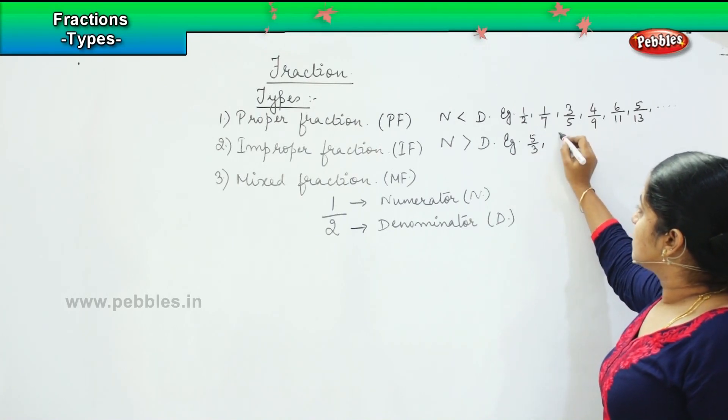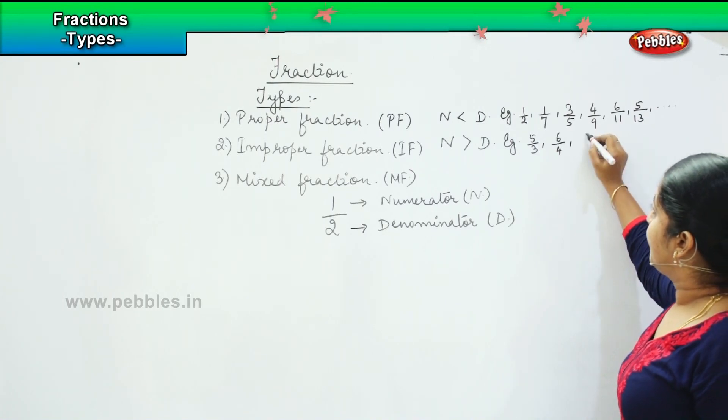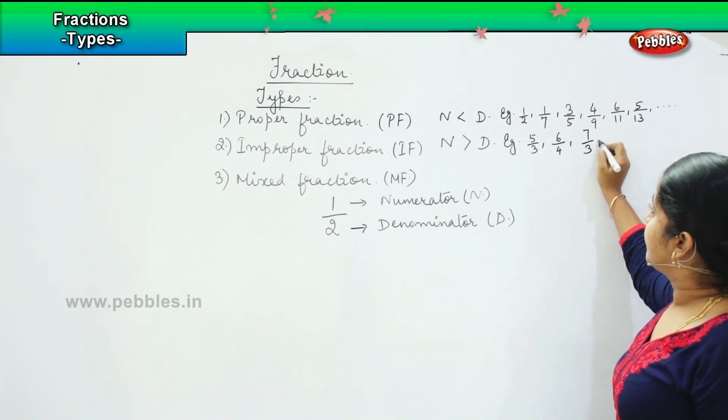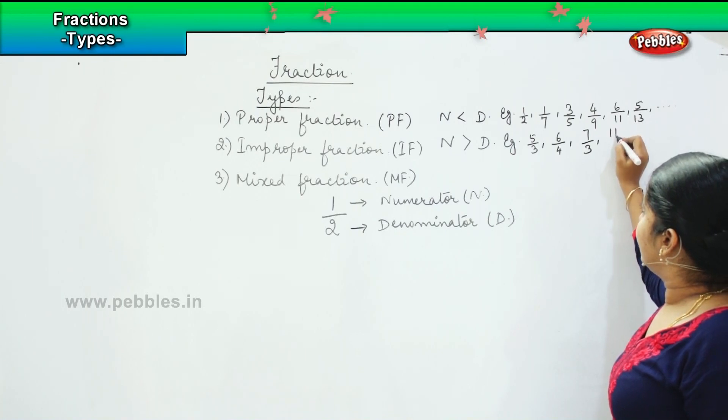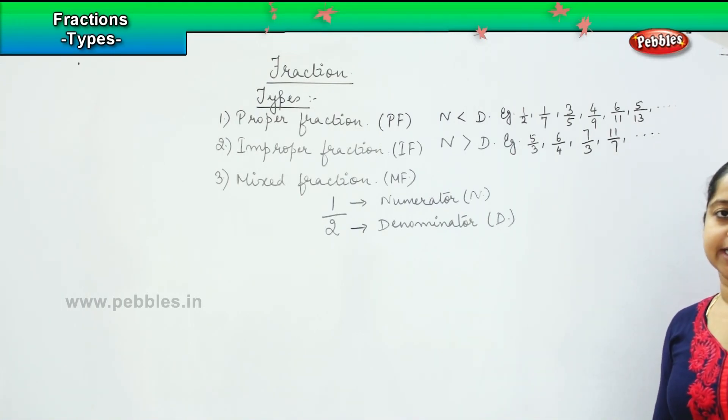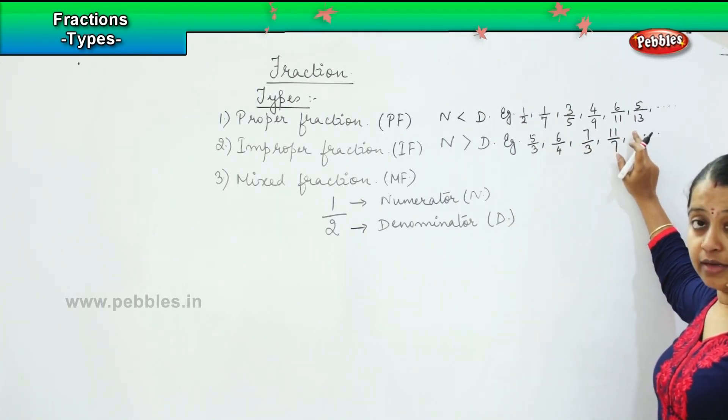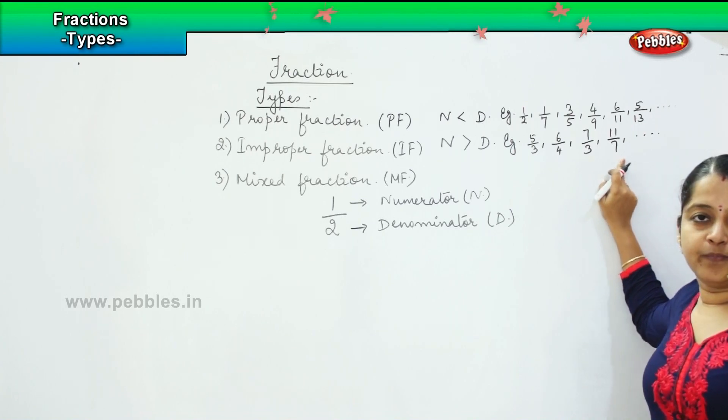6 by 4, 7 by 3, 11 by 7, etc. In all these cases, you see that my numerator value is higher than the denominator value.